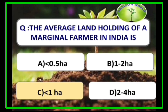The average land holding of a marginal farmer in India is less than 1 hectare. Small farmers hold 1–2 hectares, semi-medium farmers hold 2–4 hectares, medium farmers hold 4–10 hectares, and large farmers hold greater than 10 hectares.